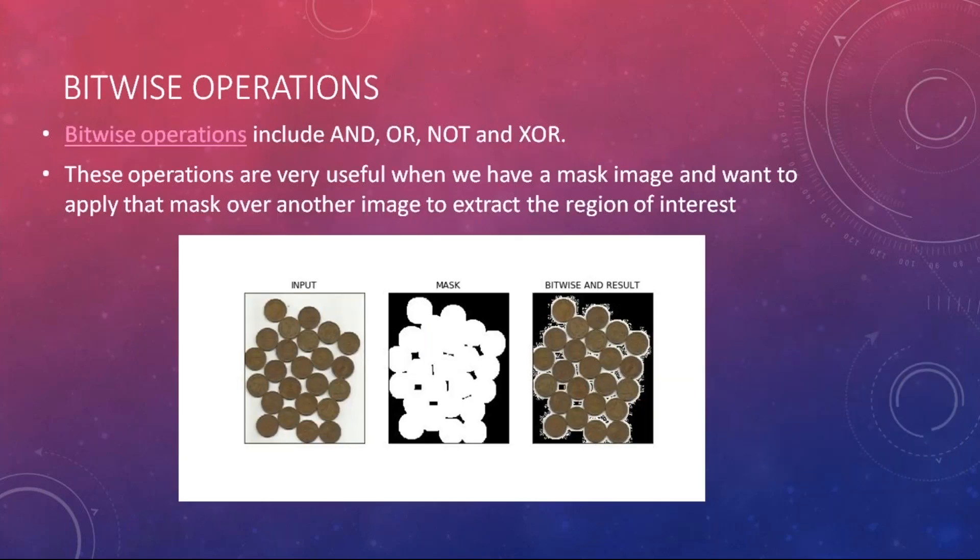The next thing we can do with OpenCV is bitwise operations. Bitwise operations consist of different logic gates — AND, OR, NOT — and these can be integrated with images. For example, given an image of coins and a mask image created with image segmentation, if we want to superimpose the mask on the input image, we use the AND function to get the bitwise result showing coins within the designated area.